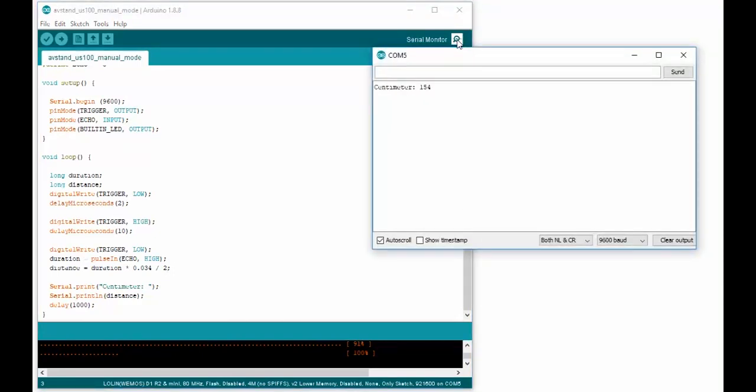Upload the code and open the serial monitor. And voila! There we have our distance measurements. Not too much code and it gives us a fairly reliable distance.